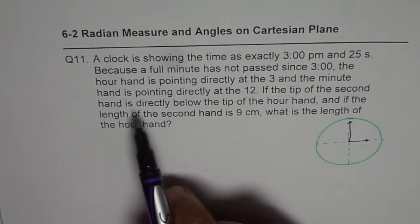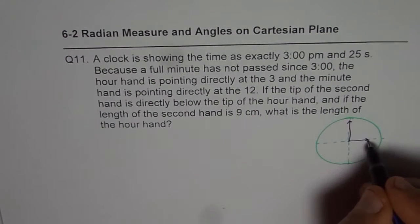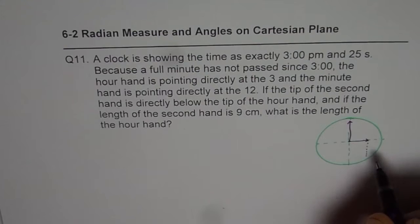If the tip of the second hand is directly below the tip of the hour hand, that means tip of the second hand is kind of like this, directly below.